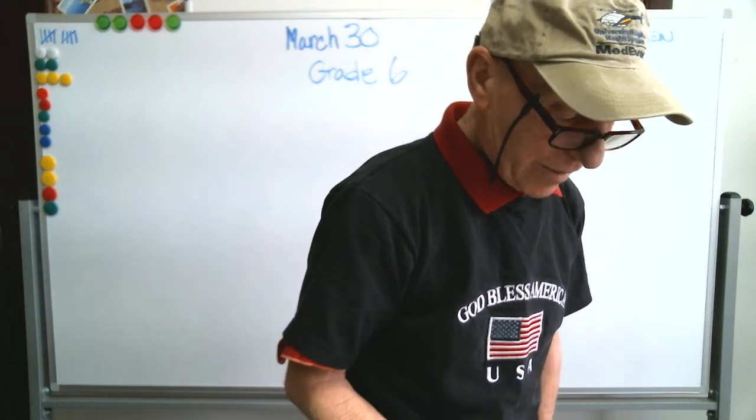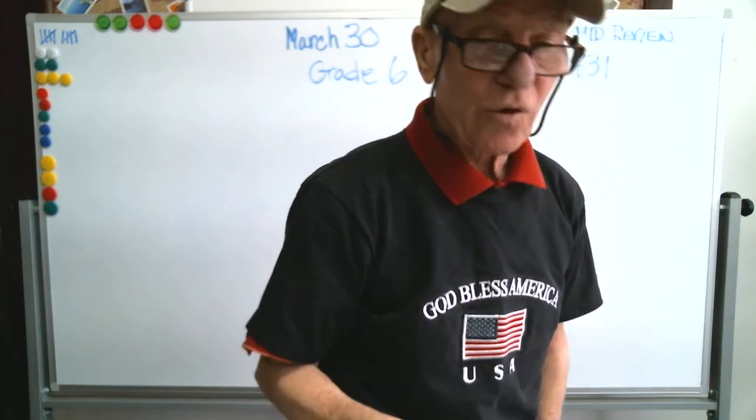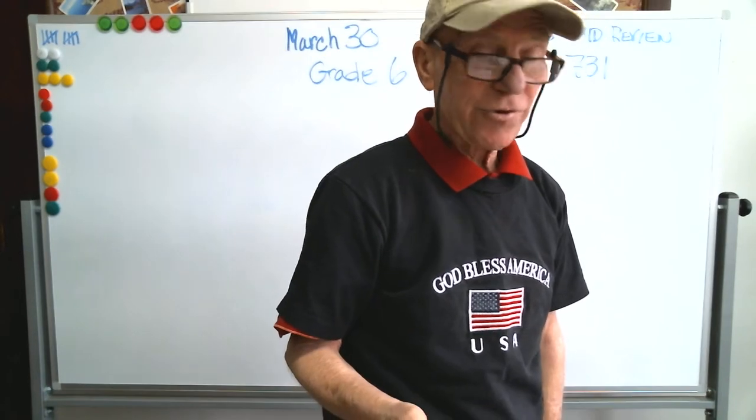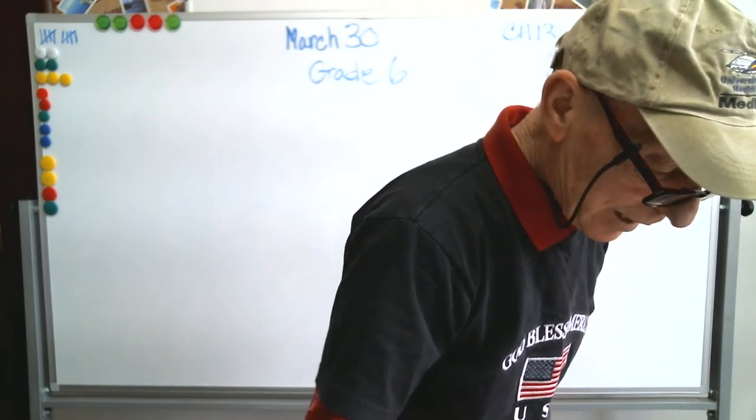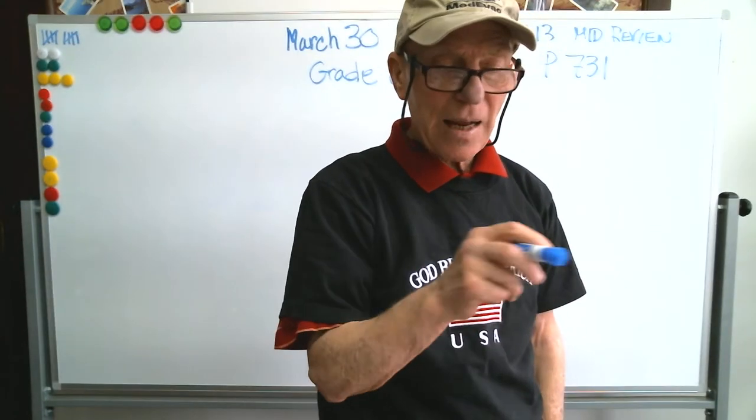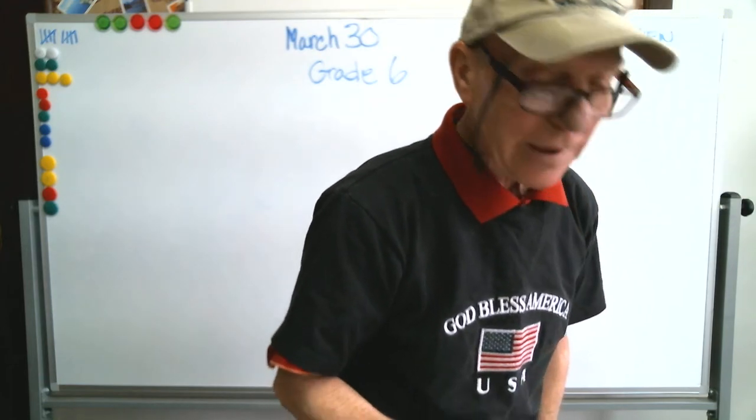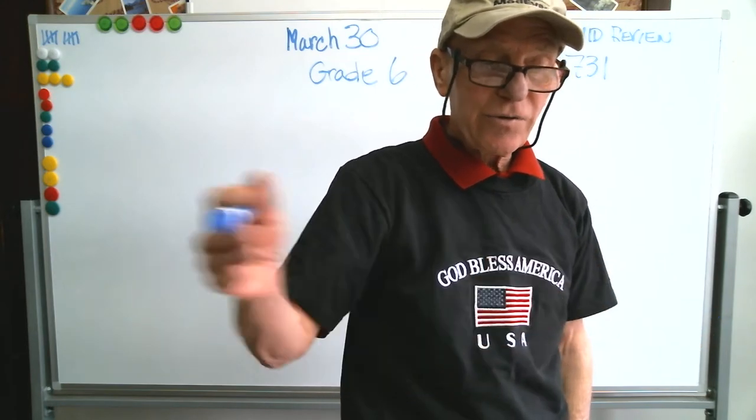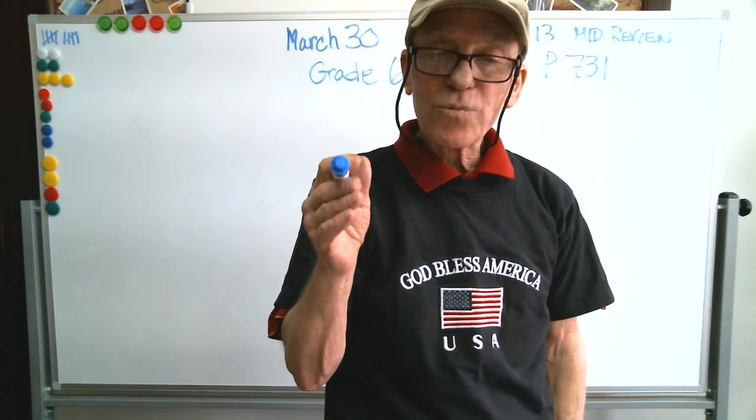The first section is about vocabulary. The first one is the blank is the difference between the upper quartile and the lower quartile of a data set. The difference between those two is the interquartile range. A graph that shows the median, quartiles, and the least and greatest values of a data set is the box plot. The difference between the greatest value and the least value in a data set is that data set's range.